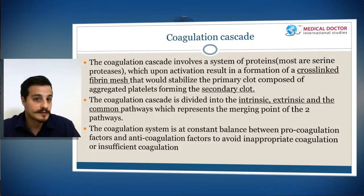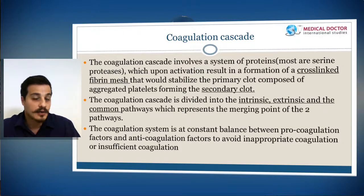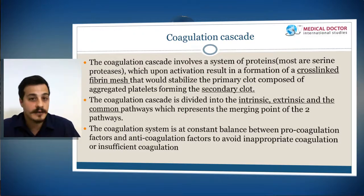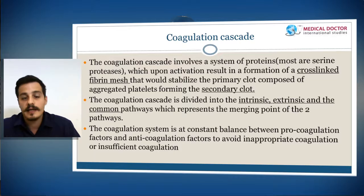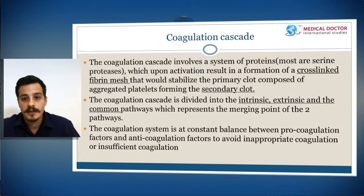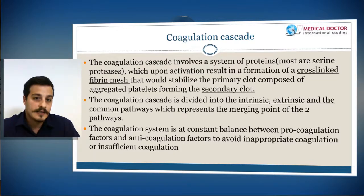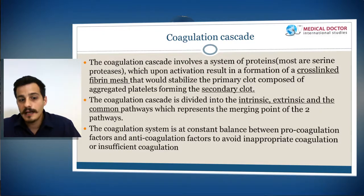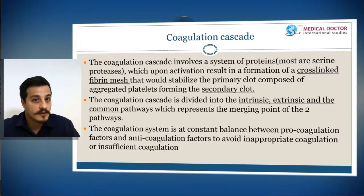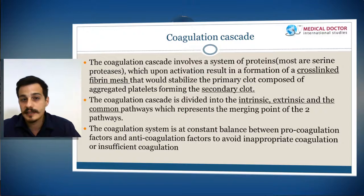The coagulation cascade is used for secondary hemostasis, stabilizing the primary platelet-derived clot. The cascade involves a system of interacting proteins — most are proteases — that upon activation cause activation of the following factor in the cascade. The result of this cascade is the formation of a cross-linked fibrin mesh, which stabilizes the primary clot, leading to the formation of the secondary clot or secondary hemostasis.